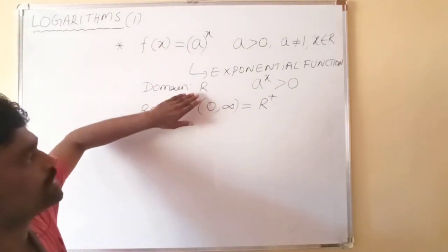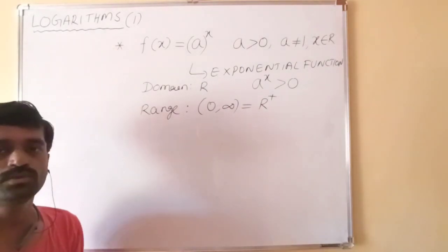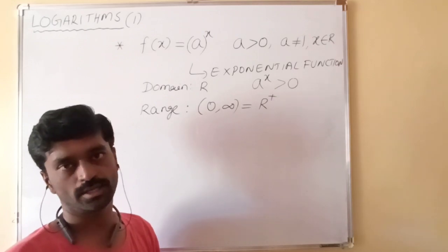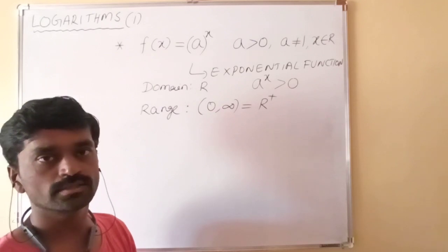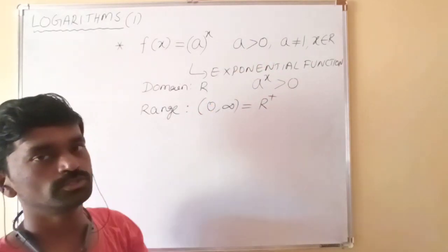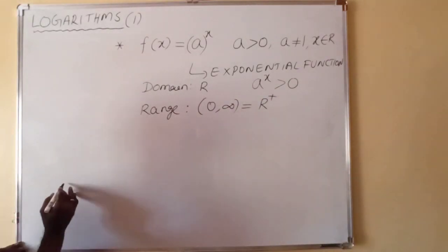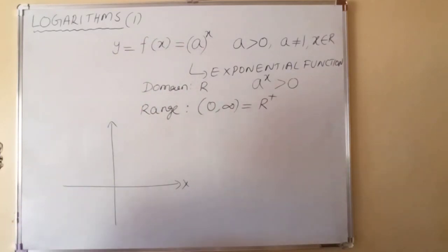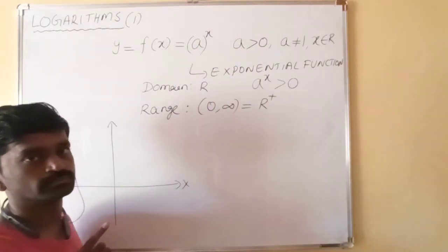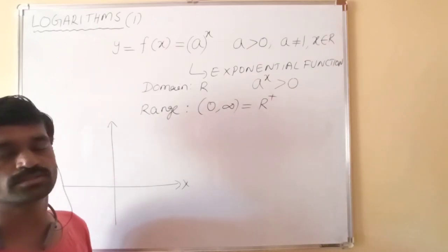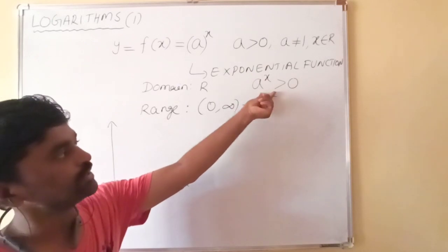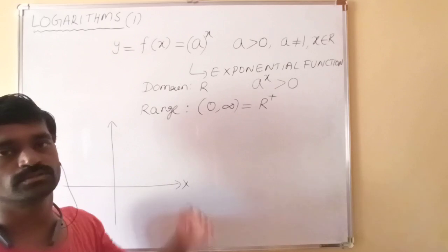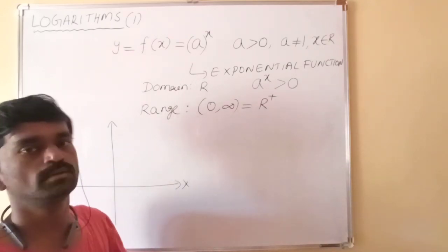The domain of this function is the set of all real numbers, and the range is the set of positive real numbers. Now I'm going to discuss the graph of this function — two cases arise: when a is greater than one, and when a is less than one (which means a lies between 0 and 1). When x is 0, a power 0 equals 1, so the function crosses the y-axis at (0, 1). The graph is always positive and completely above the x-axis — it never meets the x-axis.